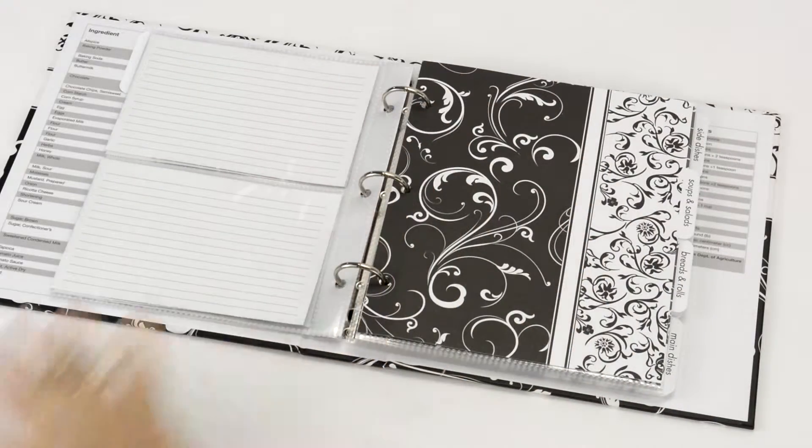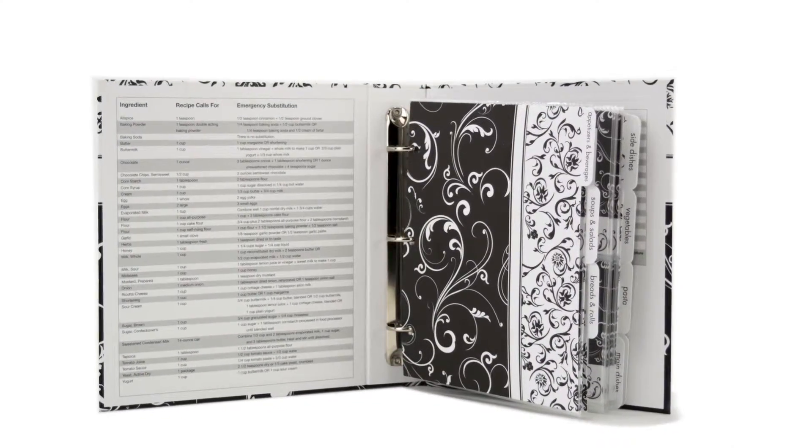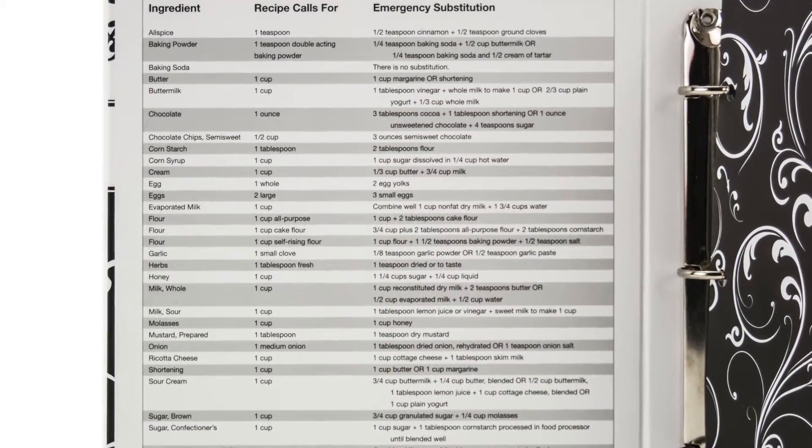and 12 tab dividers. Conveniently located on the inside front cover is an emergency substitution chart for those times when you just don't have all the right ingredients.